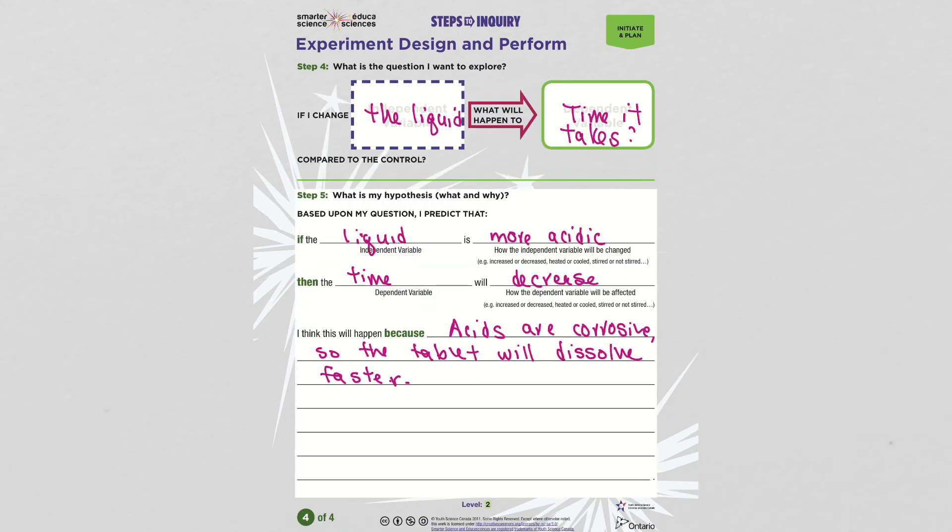And then you would write your hypothesis. If I change the liquid, what will happen to the time it takes for the lid to pop off? So I would say, based on my question, I predict, and then I think about what kinds of liquids am I using? Some of them are acids, like vinegar and lemon juice are all acidic. They're sour.